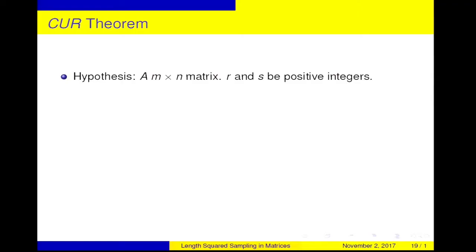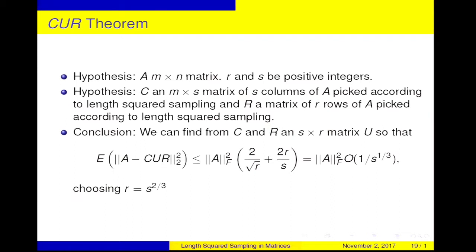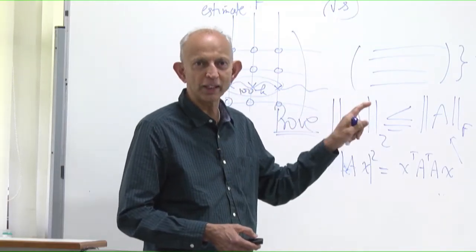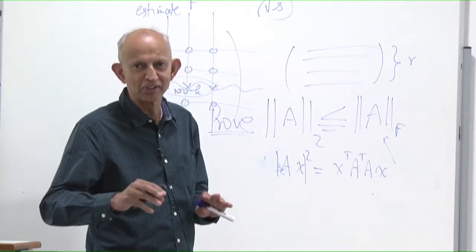So we get the theorem. A is an M by N matrix, R and S are positive integers, C is an M by S matrix of columns via length squared sampling, R is length squared sampling of rows, and R and S are not necessarily equal. The conclusion is: we can find from C and R an S by R matrix U so that the bound holds. The best choice of R is S to the two-thirds. There is also a bound on the Frobenius norm. Before going on to SVD, this is not the best you can do — there are better results.